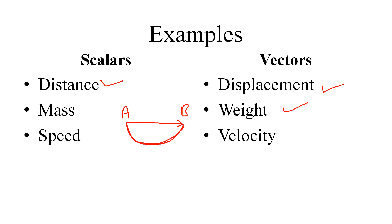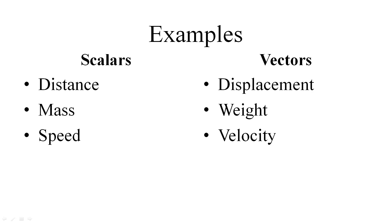Why is weight a vector? Because weight means gravity — gravity is acting upon the mass, and gravity has a definite direction towards the Earth. The Earth is pulling you towards itself, so it has direction, and therefore weight is a vector.